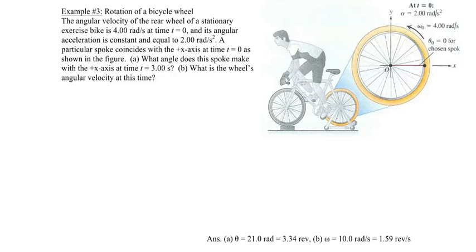Welcome to example number three. We have the rotation of a bicycle wheel, of really a stationary exercise bike, as you can see in the diagram, so that the axles are remaining stationary, and really it's just the spokes, the wheel itself, that's rotating.